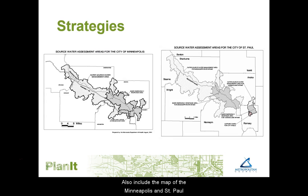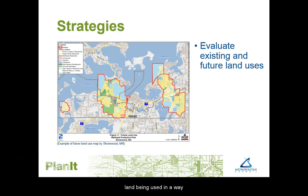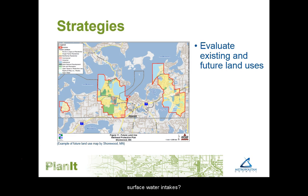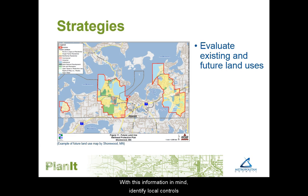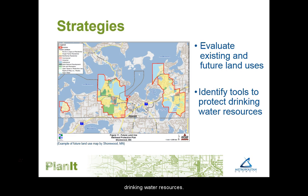Also include the map of the Minneapolis and St. Paul surface water source water protection area if it overlaps your community. Evaluate existing and future land uses throughout the entire drinking water supply management area. Is land being used in a way that reduces the risk of contaminating groundwater or surface water intakes, particularly where the drinking water supply is most vulnerable? With this information in mind, identify local controls and other planning tools that can be used in your community to protect drinking water resources.